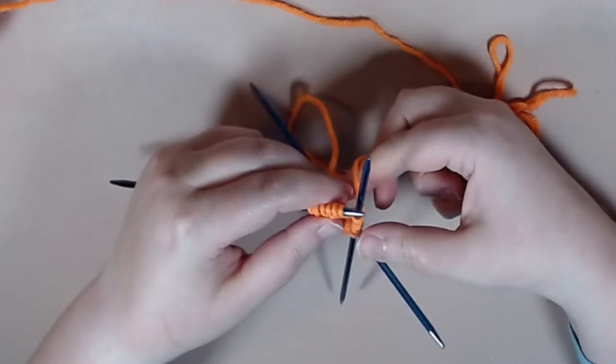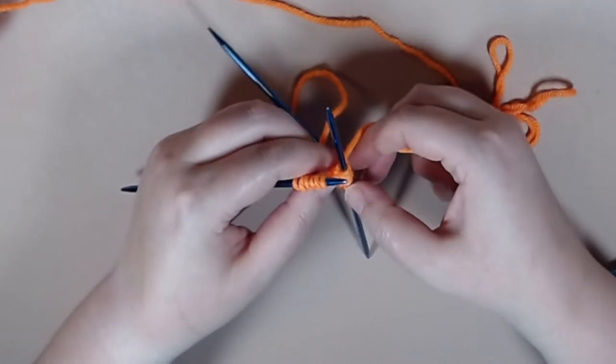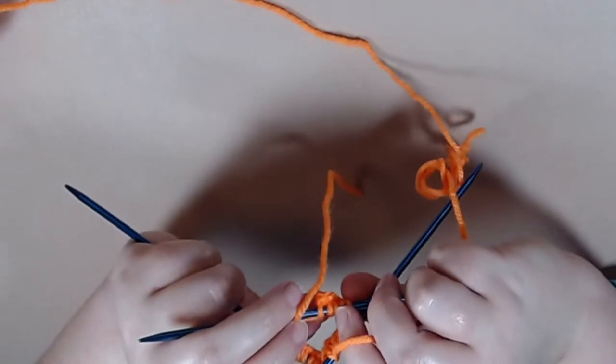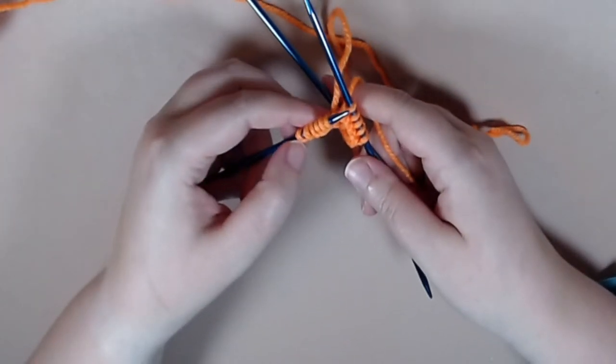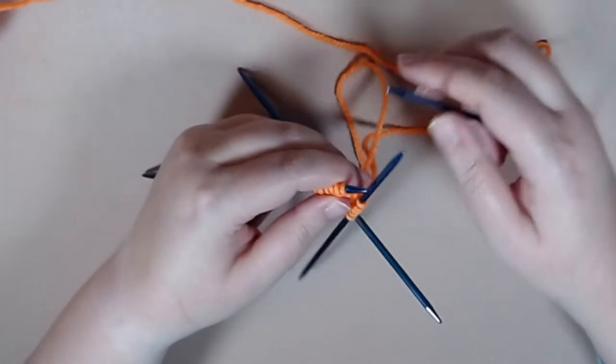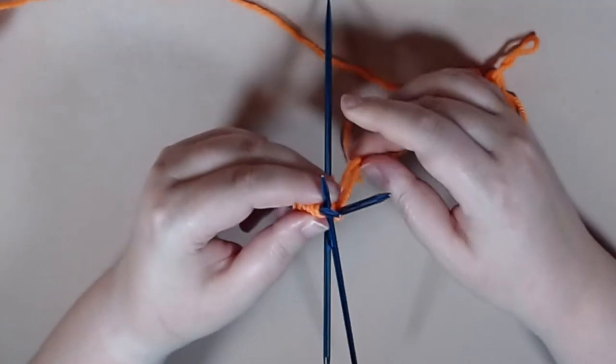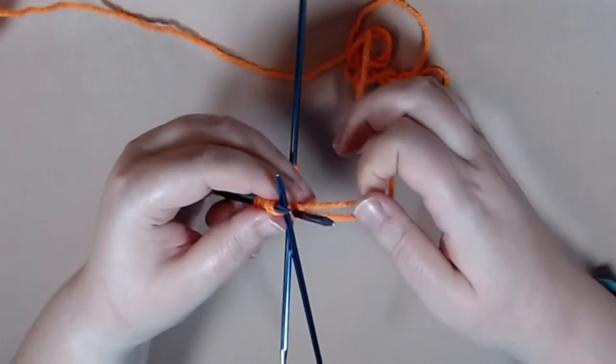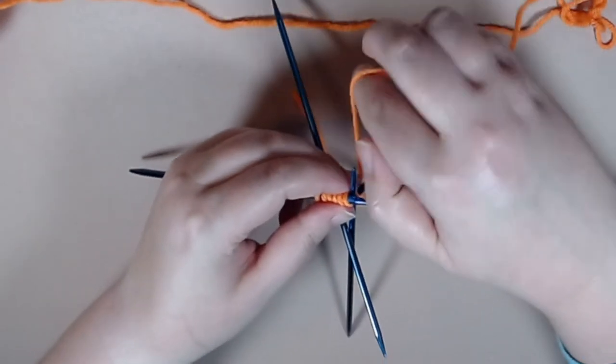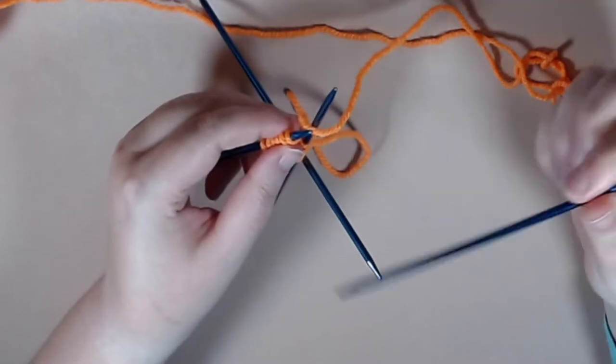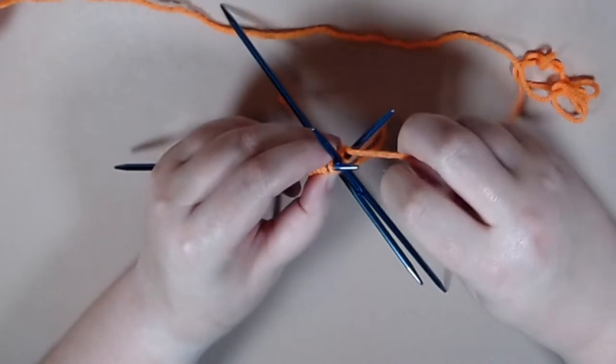So we're going to grab our fourth needle at this point. I'm just making sure I counted properly on each needle. It should be five, five, six and it is so we're going to keep going. So on this needle we are just going to end up knitting those six stitches onto this fourth needle.